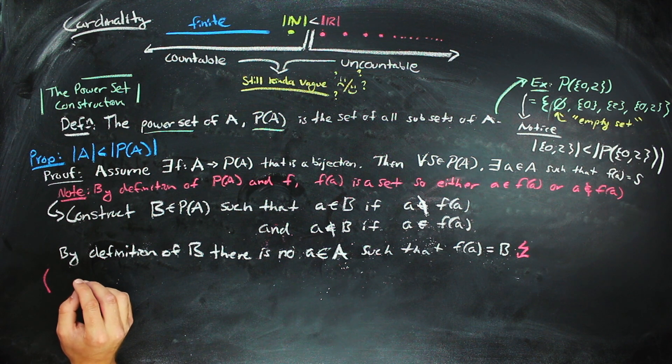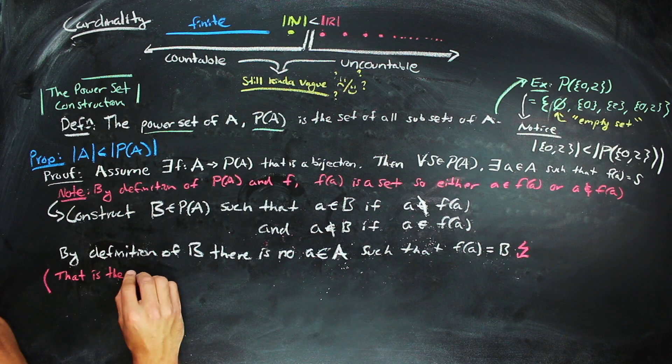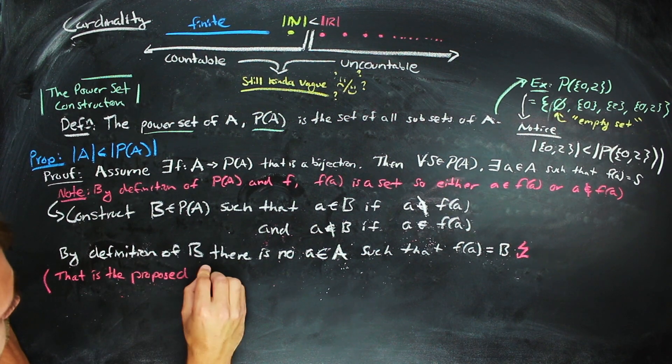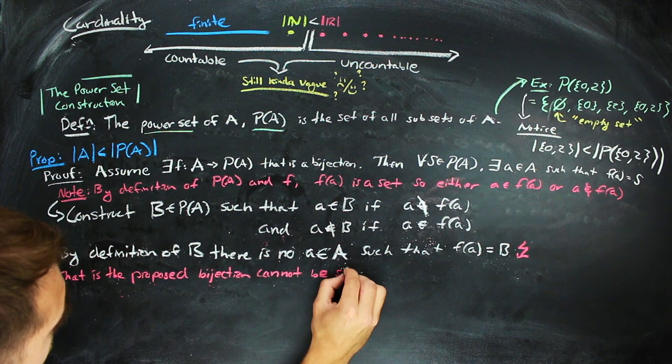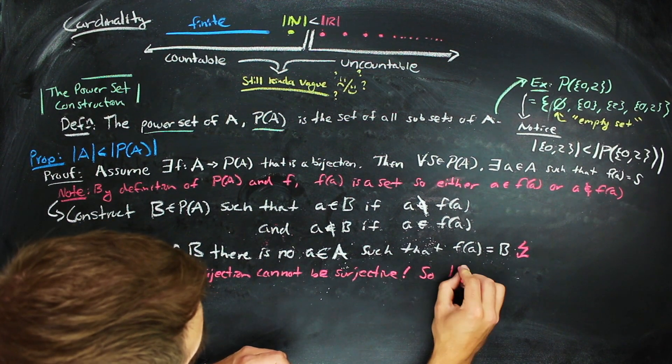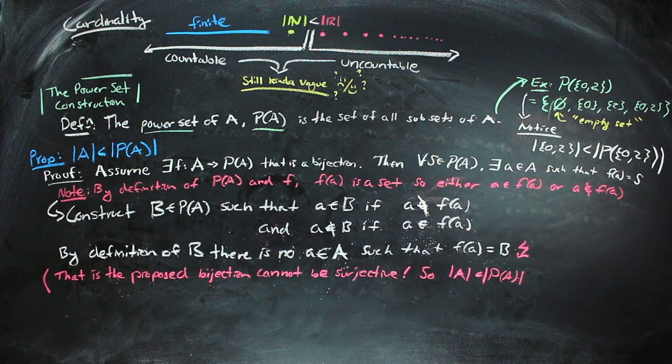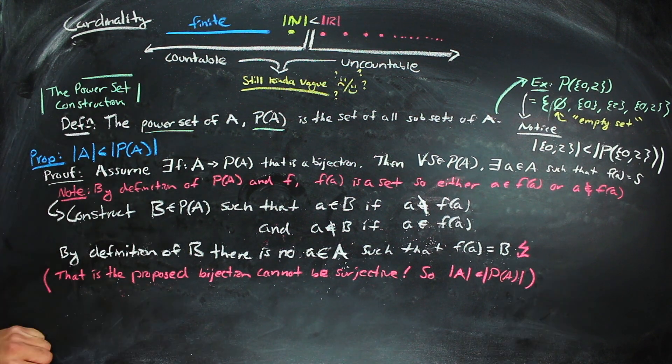And it's much the same way as how we got the contradiction between the natural numbers and the real numbers. That is, the contradiction to there being a bijection arises from the proposed bijection not being surjective. Thus, we know that the cardinality of our set a must be strictly less than the cardinality of the power set of a.